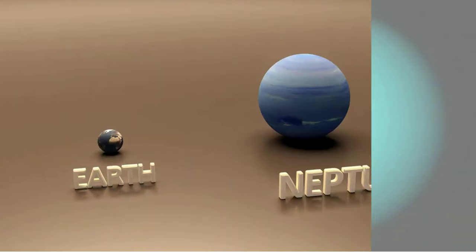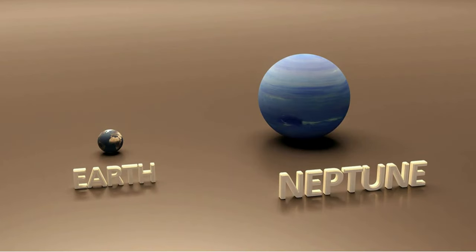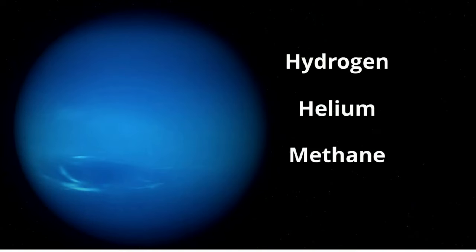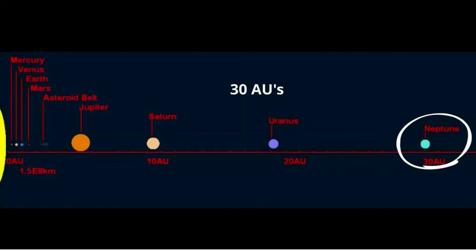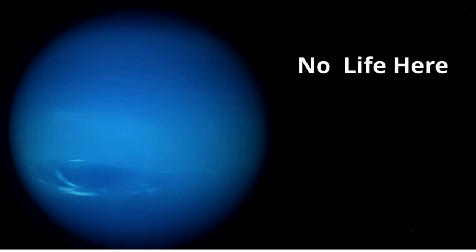Neptune is 4 times the size of the Earth. Its surface is mainly a dense, soupy mixture of water, methane, and ammonia that surrounds a small, dense, solid core. Its atmosphere is mainly hydrogen, helium, and around 1% methane. Neptune is 30 AU from the Sun, and no life has been detected on Neptune.